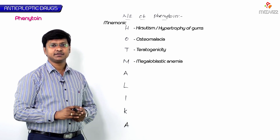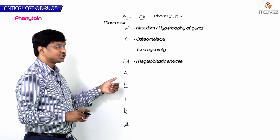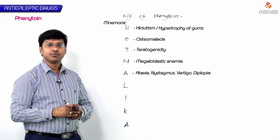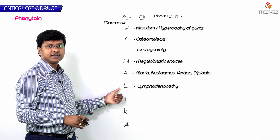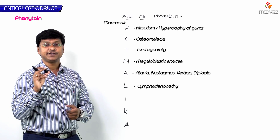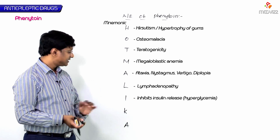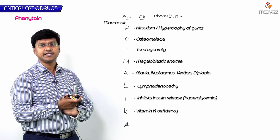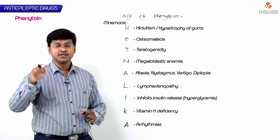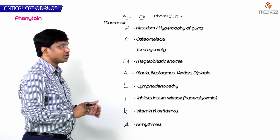M stands for Megaloblastic anemia (treated with folic acid). A stands for Ataxia and other cerebellar symptoms (nystagmus, vertigo, diplopia) at toxic doses. L stands for Lymphadenopathy. I stands for Inhibition of insulin release causing hyperglycemia. K stands for vitamin K deficiency. A stands for Arrhythmias — fast high-dose administration causes arrhythmias and cardiovascular collapse.